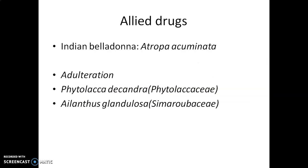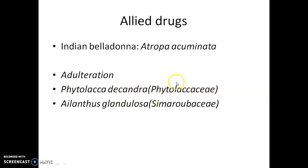This is the structure of atropine. The allied drug used as a source is Indian Belladonna, which belongs to the species Atropa acuminata. The drug is often adulterated with similar-looking plants that contain very little or none of these alkaloids — specifically Phytolacca decandra, belonging to the family Phytolaccaceae, and the leaves of Ailanthus glandulosa.